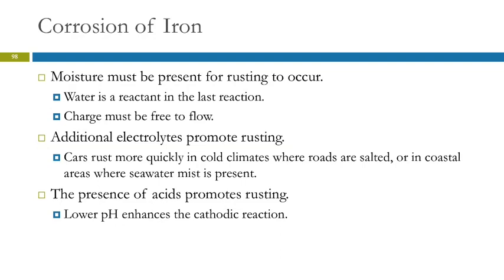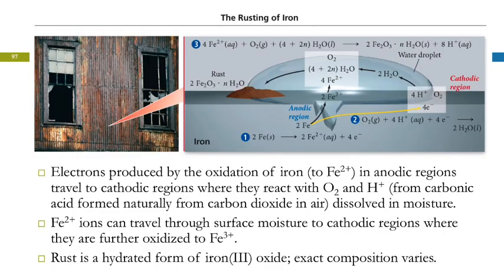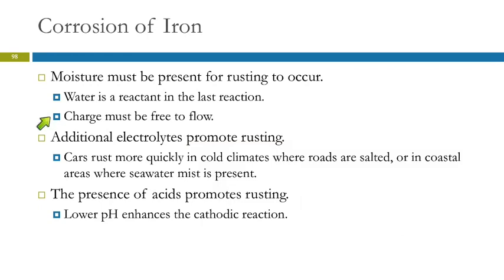What needs to be present for rusting to occur? There's got to be moisture — it doesn't have to be wet or submerged, but there needs to be moisture. Even just condensation or extreme humidity is enough. Water is actually a reactant in the reaction where Fe2+ is oxidized to Fe3+, so you need water not just for charge to flow, but as a reactant. If you have additional electrolytes such as various salts — anything ionic dissolved in the moisture — that makes it conduct electricity better and speeds up the rusting.